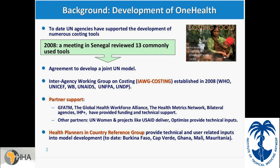This is just to show the background of how the One Health Tool was developed. We know that UN agencies have supported the development of many different costing tools, and many of you on the call know these tools very well. In 2008, there was a meeting where commonly used tools were reviewed, and as the basis of this meeting there was an agreement to develop a joint UN tool. This development has been led by the inter-agency working group on costing, established in 2008, with members including WHO, UNICEF, World Bank, UNHCR, UNFPA, and UNDP.